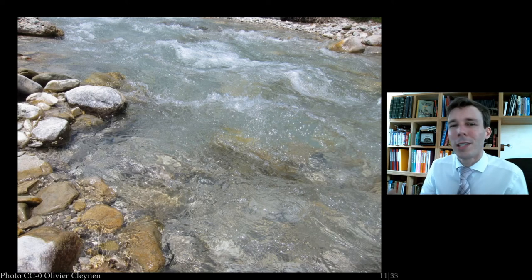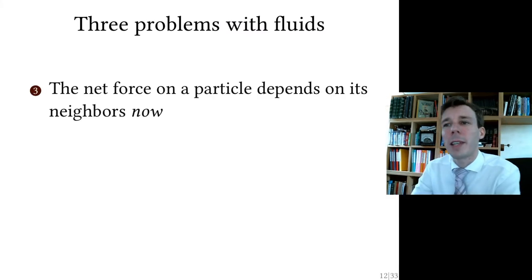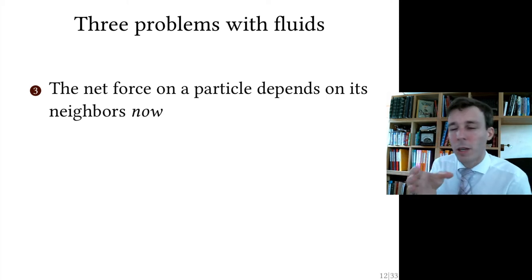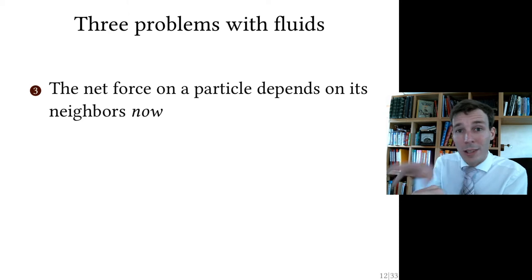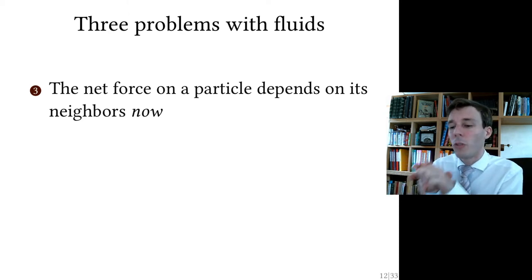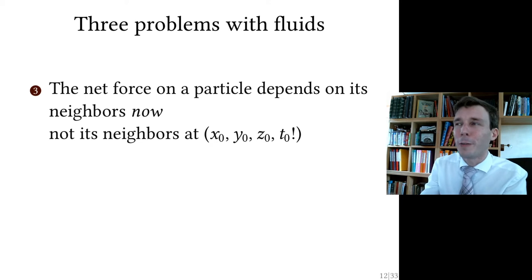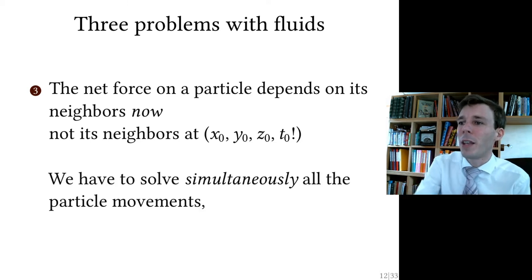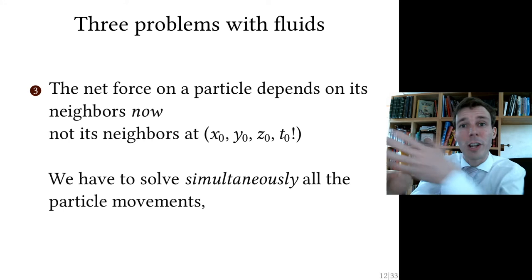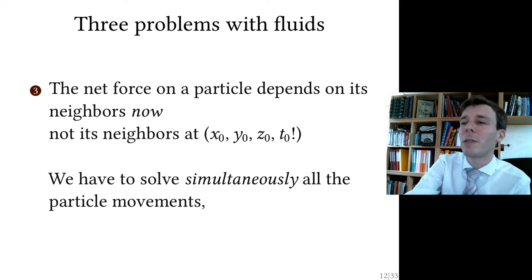After a while you have to ask yourself: is this really still a particle? Is this still a cube that I'm looking at? And the third problem is that to compute what is happening to this particle — how its velocity vector will be shifted — you have to compute what the other particles next to it are doing. They all depend on one another. To compute what's happening now, you need to know what the neighbors are doing now, not the neighbors it had before. So you have to solve simultaneously all the trajectories as a function of time, and it becomes a very difficult accounting problem.